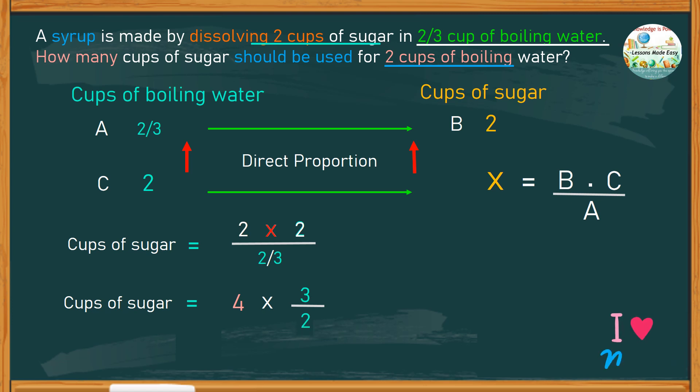To make the number much smaller, we can reduce 4 and 2, making them 2 and 1. Now, the only number you have left to multiply is just 2 and 3, which gives us a product of 6. So, to answer the question as to how many cups of sugar should be used for 2 cups of boiling water, the answer is 6 cups.